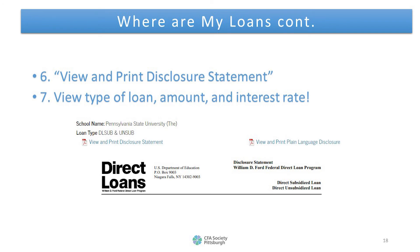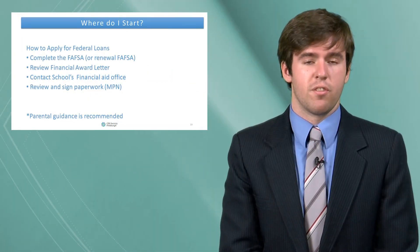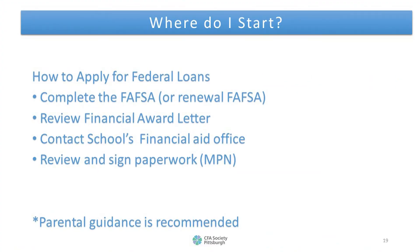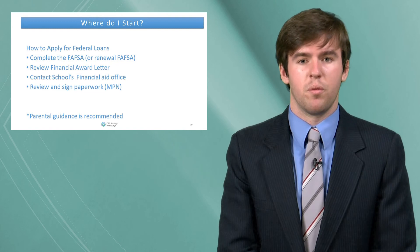Now if you're not in college and you're applying for FAFSA, where do I start? You can complete the FAFSA form or renewal FAFSA because you have to do it every year. You can review the financial award letter that your college has given you, or contact the school's financial aid office. Last thing you would want to do is review and sign all of the paperwork and make sure that it is accurate. While it's not required, it is recommended that there is parental guidance, especially if you are doing this for the first time and you're under the age of 18.